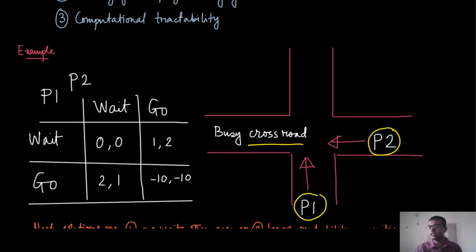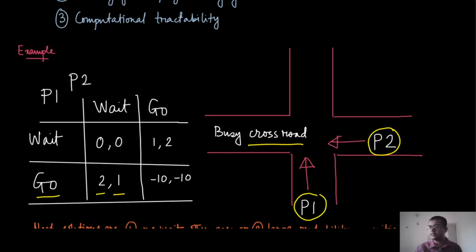If player 1 goes and player 2 waits, player 1 gets a higher payoff and player 2 gets some positive payoff too, knowing that once player 1 has passed it will be player 2's turn. The symmetric opposite happens when player 1 waits and player 2 goes. But if both go, they crash into each other and receive a very large negative payoff.